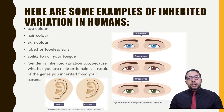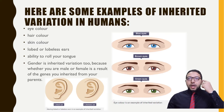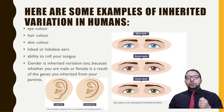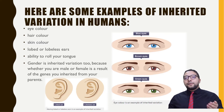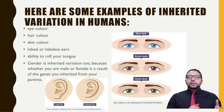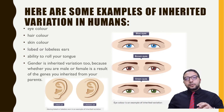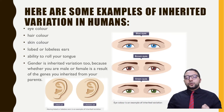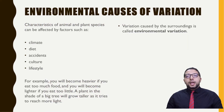Here are some examples of inherited variation in humans: eye color, hair color, skin color, whether you have looped or loopless ears, and the ability to roll your tongue. Gender is also one of the main characteristics determined by the genes of the father. In the same family, some siblings might be male and others female — all based on genes carried from parents to offspring.